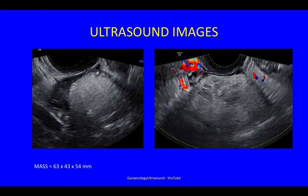She had a scan which showed a mass with a maximal size of 63mm in the adnexal region. The image on the left is the scan of the mass, and the one on the right shows colour Doppler information about vascularity.